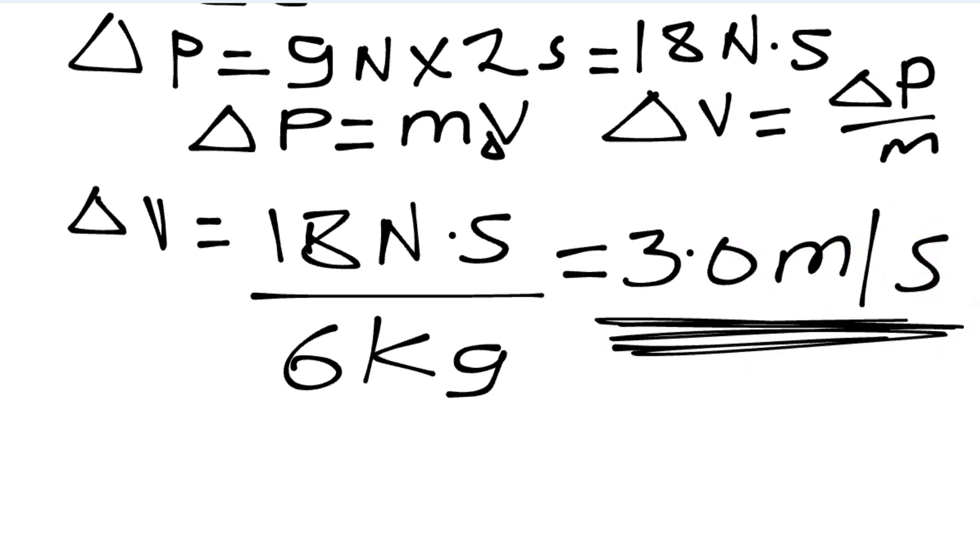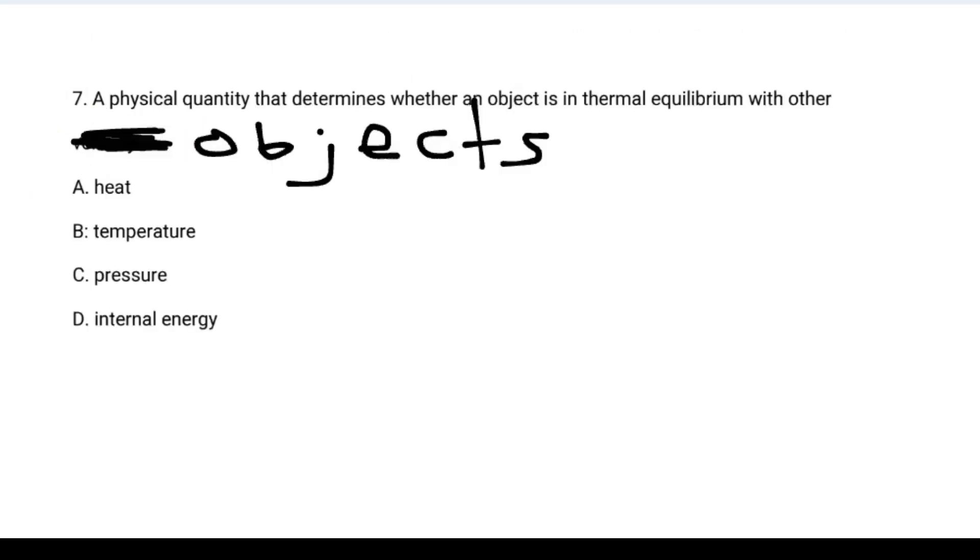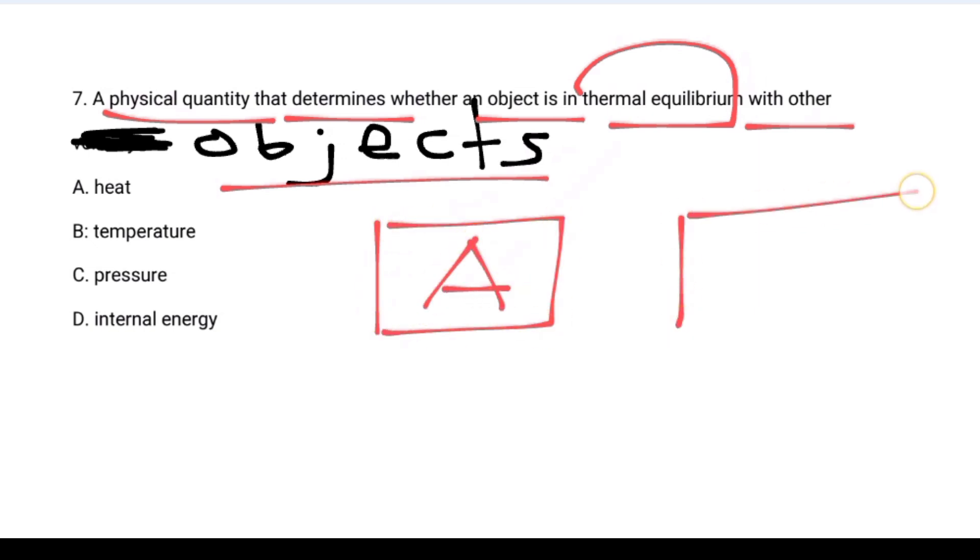This question says a physical quantity that determines whether an object is in thermal equilibrium with other objects. The physical quantities are mass, time, temperature, and amount of substance.